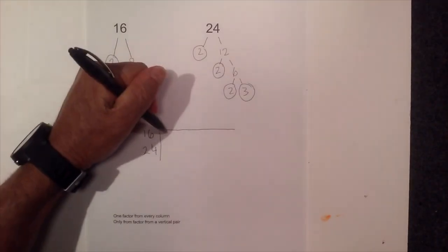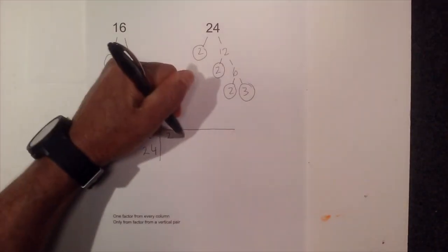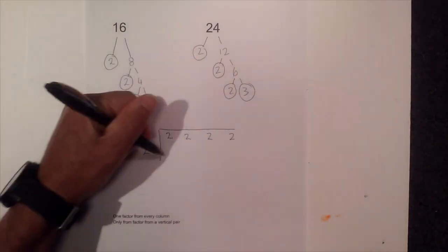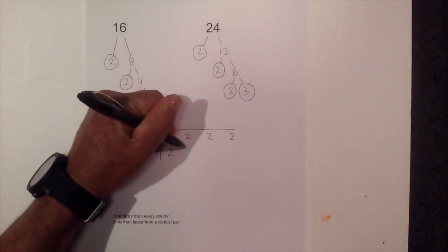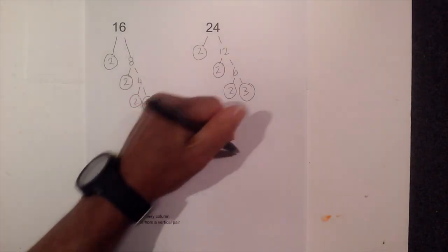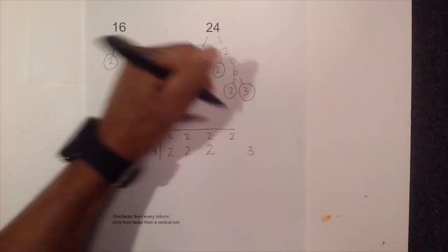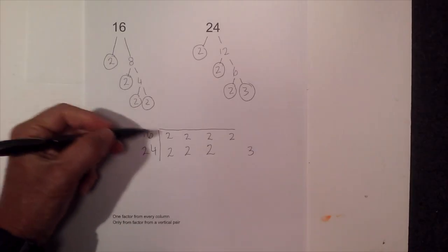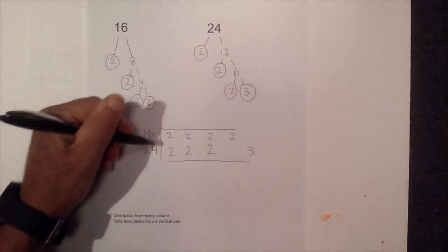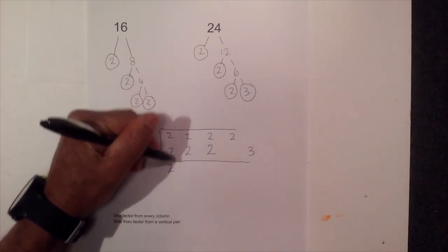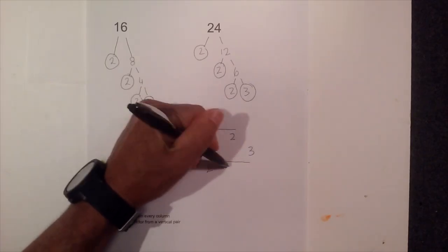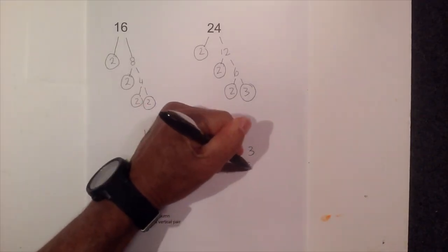So now I am going to write out all the prime numbers. Now when I get to 24 I have a 2, a 2, a 2. Since I do not have another 2 I am going to skip a space and write a 3. Now I am going to apply my rules. Remember only one number from the vertical pair. I am going to draw this just to keep it neat. So I have a 2, a 2, a 2. Remember one from every column. A 2 and a 3.